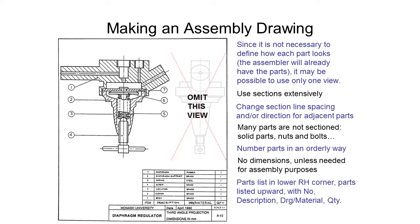Finally we include a parts list in the lower right hand corner. The parts list is listed upwards so we have number 1 starting at the bottom here and then we go up to number 7 here.